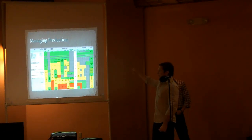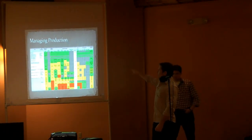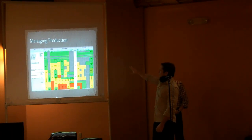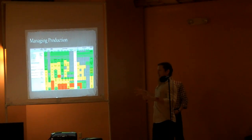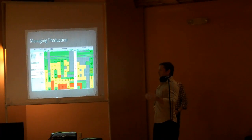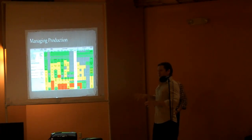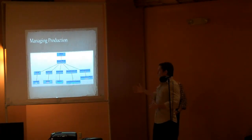This is how we manage our production, and we use Google Groups. Essentially where you see everything that's green here means that it's already done; if it's yellow, it's in progress; if it's red, then it's not started yet. So this is a way of managing some 25 students all at once to create an animated film.